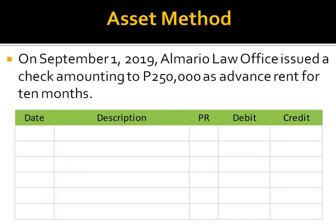Let's have this problem. On September 1, 2019, Almario Law Office issued a check amounting to P250,000 as advance payment for 10 months. The requirement for this problem is to prepare the necessary adjusting entry concerning the prepayment, assuming the company uses the calendar year. But again, before we can do that, it is a must for us to recall the journal entry made by the company to record the advance payment.